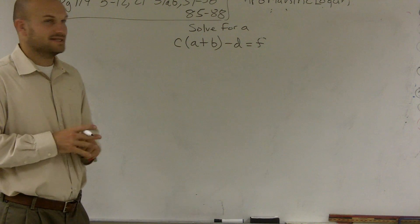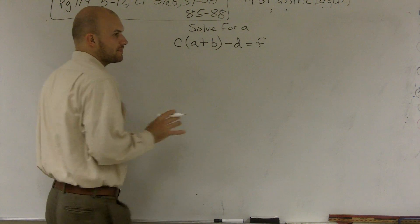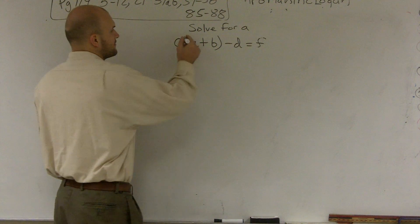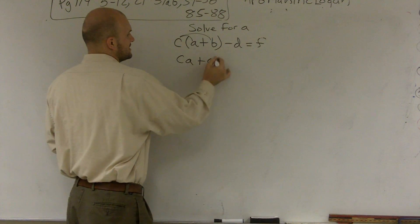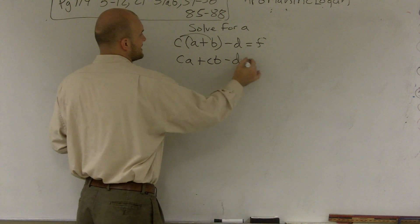The easiest thing to do right now is whenever I have a distributive property, if I can expand that out, it's going to help me out. So let's multiply C times A plus C times B minus D equals F.